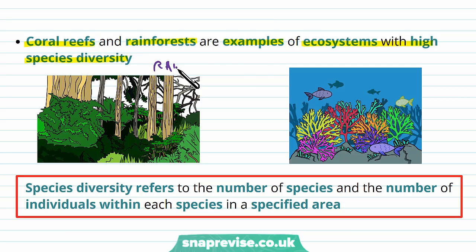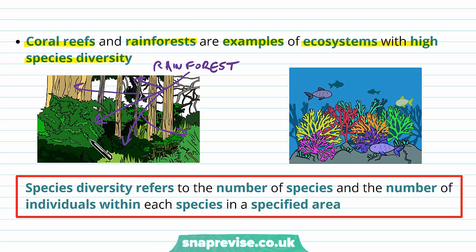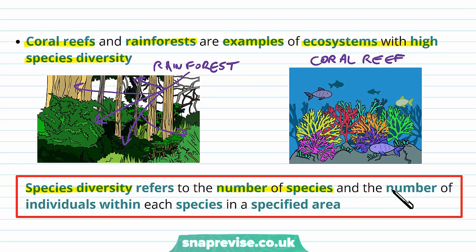Coral reefs and rainforests are examples of ecosystems with very high species diversity. The rainforest is one ecosystem containing lots of different habitats: areas under bushes, inside trees, in the trees, on the ground, in between different plants, and so on. The biodiversity is very high because it provides lots of habitats with varieties of plants and animals. Similarly, the coral reef has coral growing on ocean rocks with various fish and other animals, giving it high biodiversity. Species diversity refers to the number of species and the number of individuals within each species in a specified area.